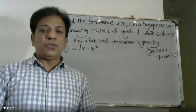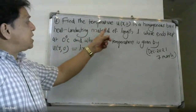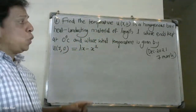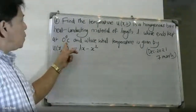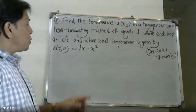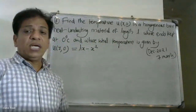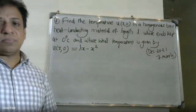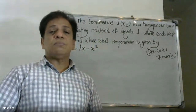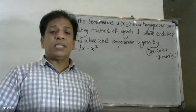Good morning students. We are going to find the temperature u(x,t) in a thin heat conducting rod of length L over a period, whose ends are kept at zero degrees, and whose initial temperature is given by u(x,0). We will find the most suitable solution using boundary conditions one by one and apply the temperature conditions.